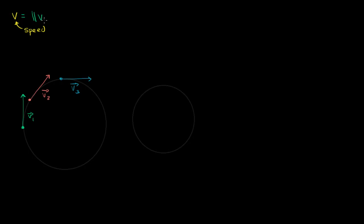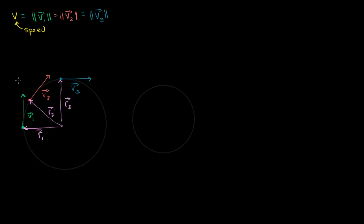So this constant speed v is equal to the magnitude of vector 1, which is equal to the magnitude of vector 2. The direction is clearly changing, but the magnitude is going to be the same — equal to the magnitude of vector 3. We're going to assume it's traveling in a circle with radius r. I'm going to draw a position vector at each point: r1, r2, and r3. The position is clearly changing, but the magnitude of our position vectors are clearly the same. I'll call the magnitude of our position vectors r — that's just the radius of the circle. So r equals the magnitude of r1, which equals the magnitude of r2, which equals the magnitude of r3.